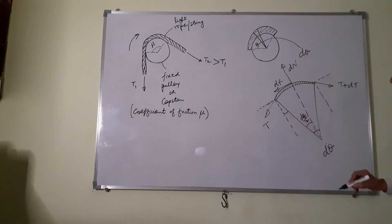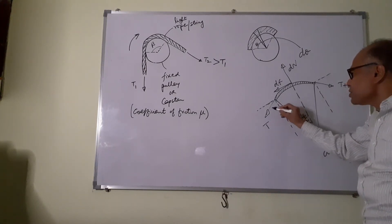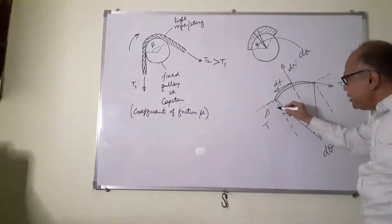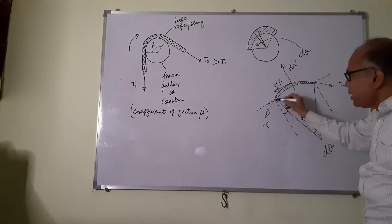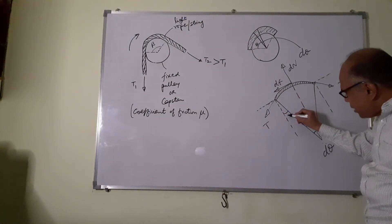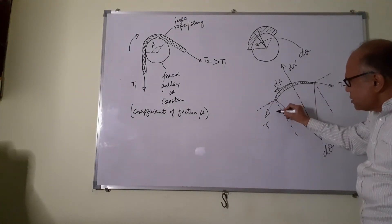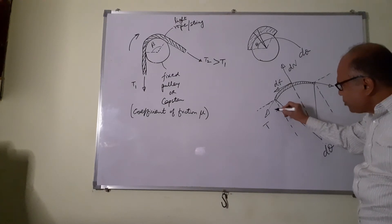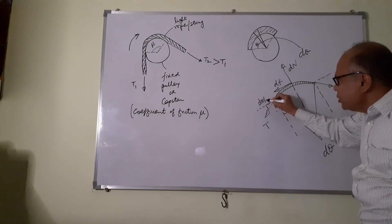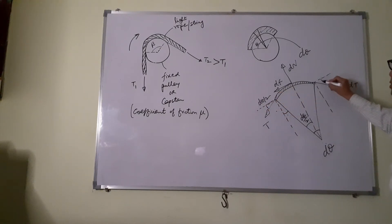This is alternate angle, so this is also D theta by 2. This is 90 degrees tangent. The tension is tangential. This is radius. This is 90 degrees. These two dotted lines are also at 90 degrees. So D theta by 2 plus this is 90, and this plus this is also 90. This is common. So therefore this becomes D theta by 2. Similarly, this will also be D theta by 2.